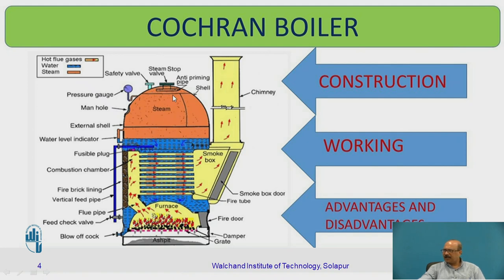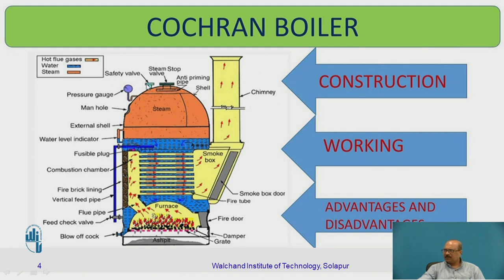The upper portion of the boiler shell is the steam portion and the remaining lower portion is the water portion. The external shell of the boiler contains high pressure steam — we call this superheated steam inside the shell. An anti-priming device is provided at the steam stop valve, through which we use the steam for industrial purposes. The high pressure steam is taken through the steam stop valve.